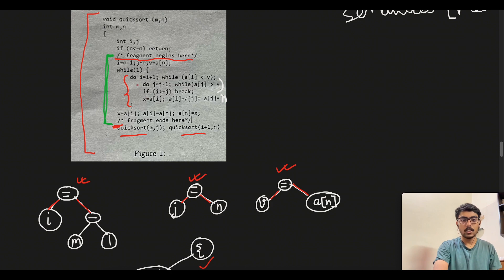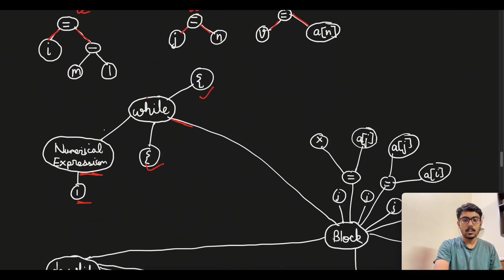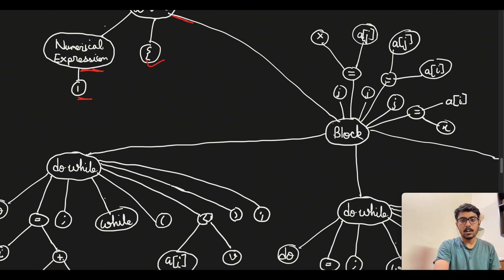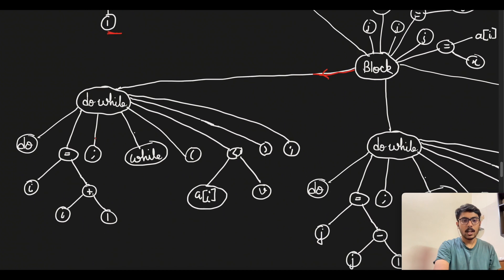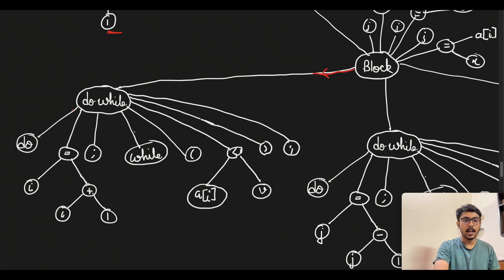If we go back to the code, we will see while one and then we have this piece of code. In this we have i is equal to i plus one and rest of it. For do i is equal to i plus one, we will have a particular path to the do while block.